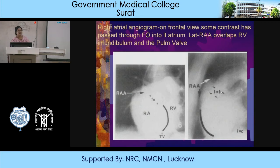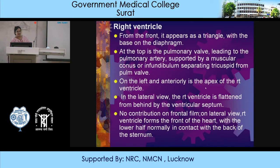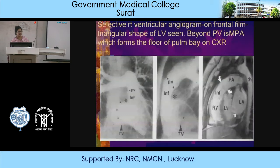The right ventricle from the front forms the bulk of the front of the heart. It appears as a triangle with the base on the diaphragm; at the top is the pulmonary valve leading to the pulmonary artery, and on the left and inferiorly is the apex of the right ventricle. In the lateral view, the right ventricle is flattened from behind by the ventricular septum. Only on the lateral view does the right ventricle form the front of the heart, with the lower half normally in contact with the back of the sternum.